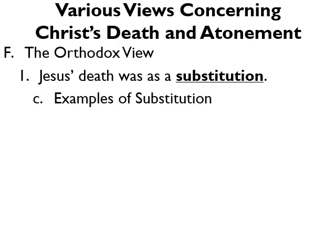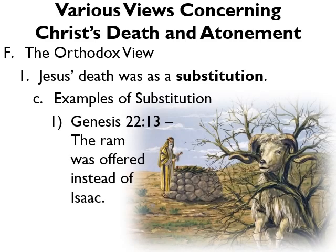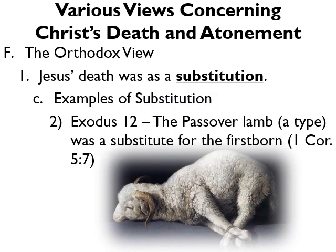Letter C. There are two primary examples of substitution seen in the scriptures. The first is in Genesis 22 verse 13. Here we see that the ram was offered instead of Isaac. After Abraham placed his own son on the altar and was about to offer him as a sacrifice to be obedient to the Lord, the Lord stopped him and showed him that he had provided a ram to take the place of his son Isaac.